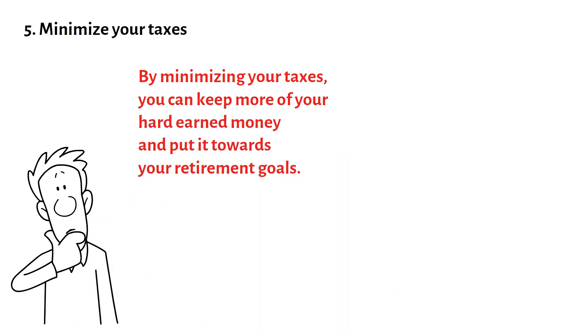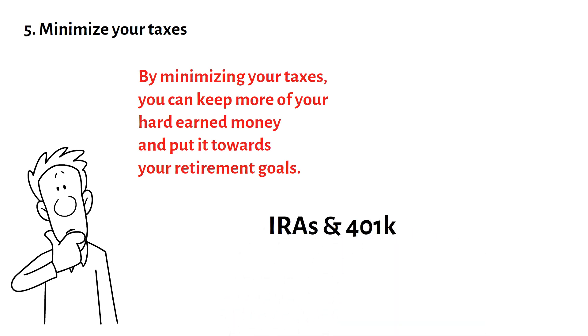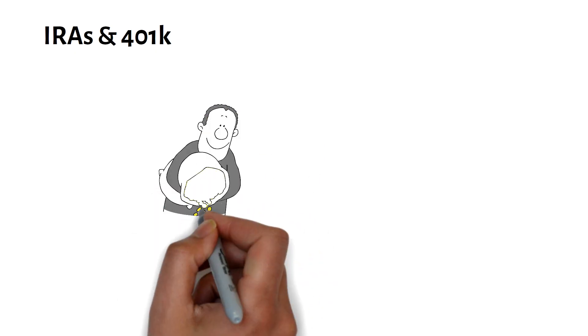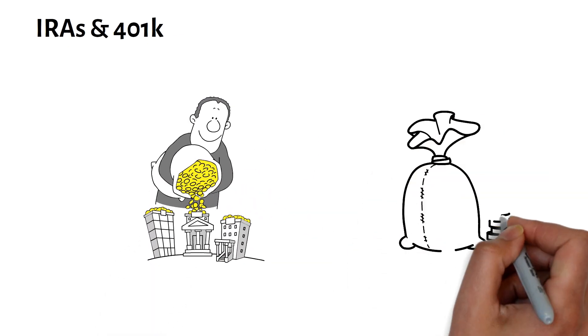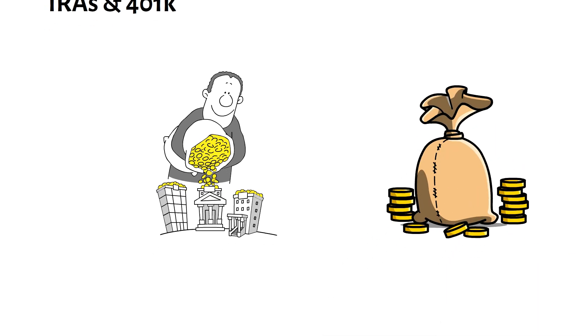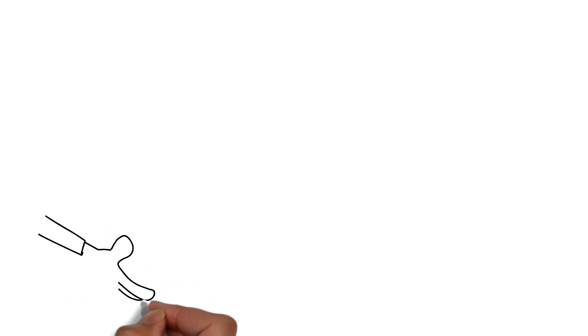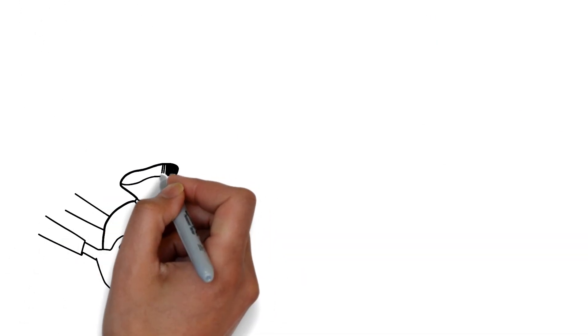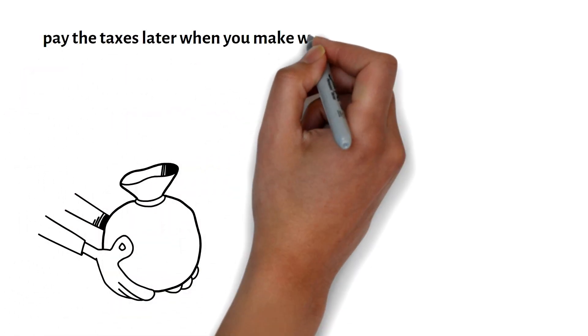One way to do this is to use tax-sheltered accounts such as IRAs and 401k plans whenever possible. These types of accounts allow you to invest money tax-free, which can result in significant tax savings over time. However, it's also important to be smart about which type of account you use.